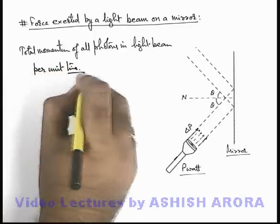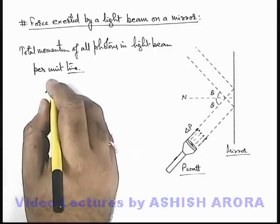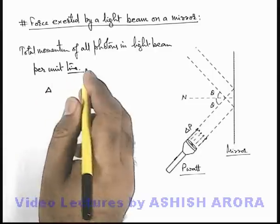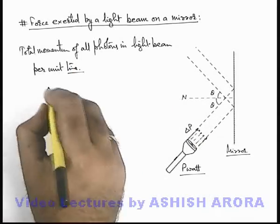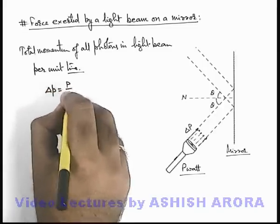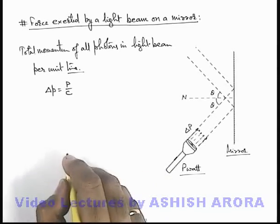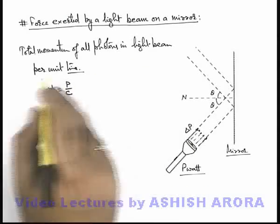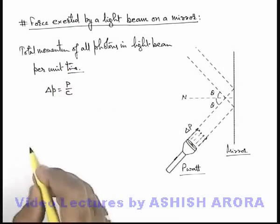Per unit time, if we calculate the momentum, it is actually the force exerted on a black body if it is placed in the path of this light beam. And this delta P we can write as P by C. If P is the power of the source, then P by C is the momentum per unit time. This we already discussed in the previous sections.